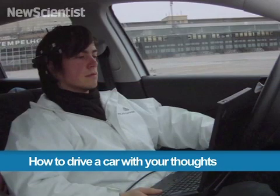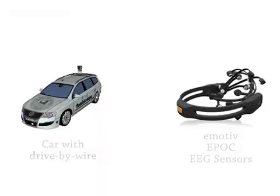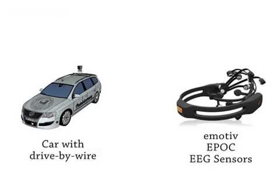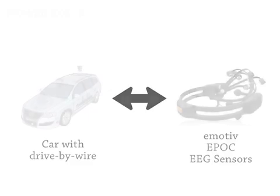In this video we're going to show you how to control a car using brain sensors. On the left is our car, and on the right you can see the EEG sensors used for measuring brain activity.